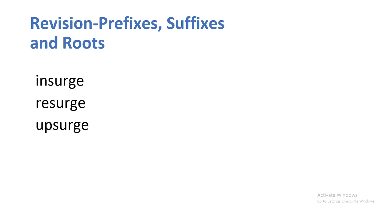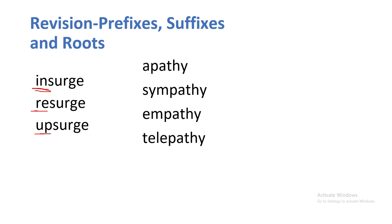Let's practice the root 'surg/search' — it means rise. Absurd: a sudden rise is called absurd. Research: 're' means again, so research is to rise again — resurgence of share values. Insurgent: to rise against the authority, to rise against the ruling government. So insurgency is to rise against authority — they all carry the meaning of rise.